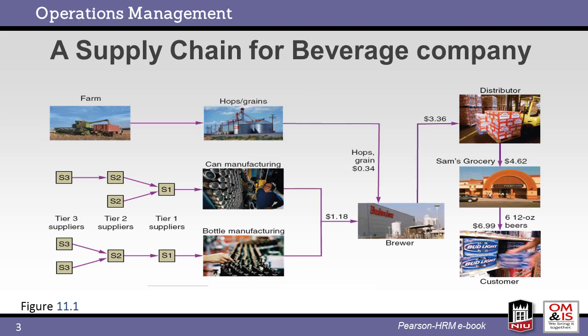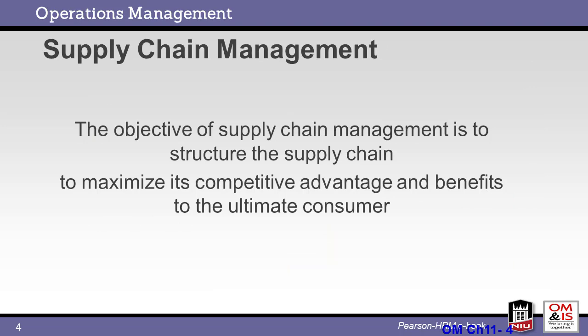This flow diagram shows an example supply chain. You can see the flow of materials from various suppliers, brewing and distribution. Note the dollar amounts associated with each step. A six-pack of beer selling for $6.99 costs the distributor only $3.36 and uses $1.42 in materials.